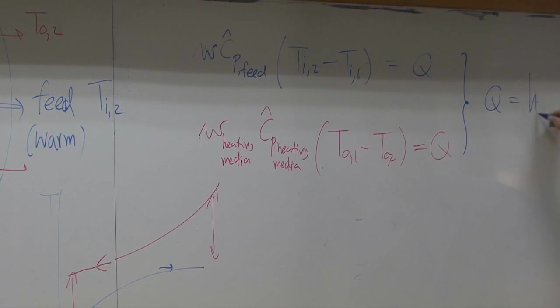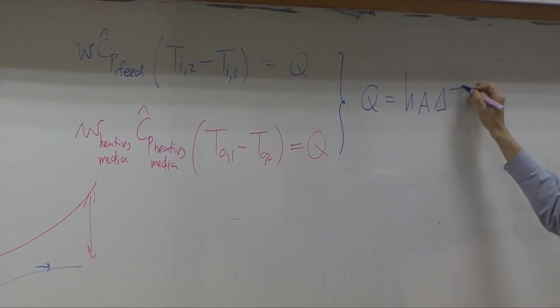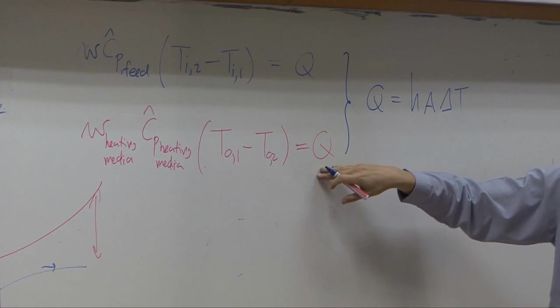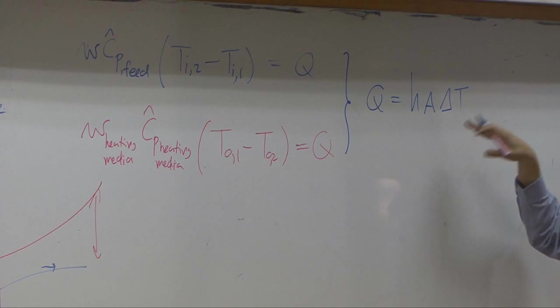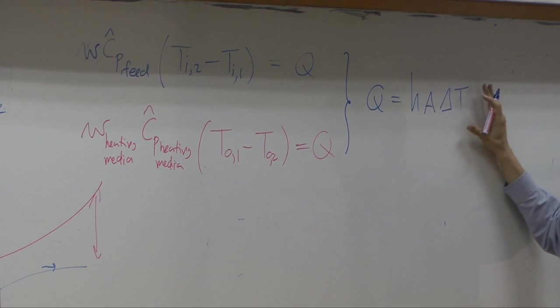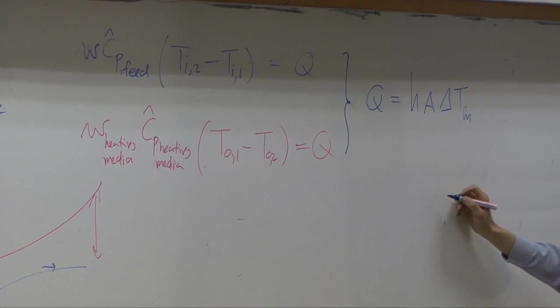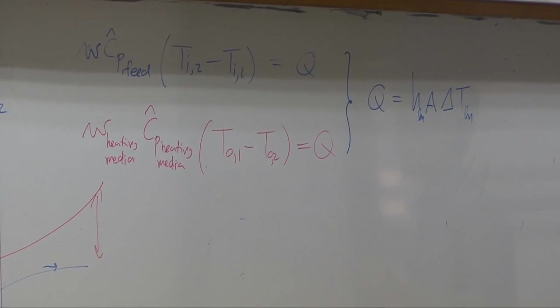Equal to what? Equal to heat transfer coefficient H, area A, delta T according to Newton's law of cooling. So, these two equations are calculations based on thermodynamics. This equation is heat transfer. So, in our class here, we use this part. I teach you this part. But in practice, you need to put them together with thermodynamics. So, it does matter which equation you use. If you use delta T log mean, this one is supposed to be H log mean as well.